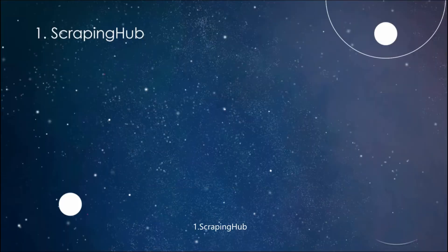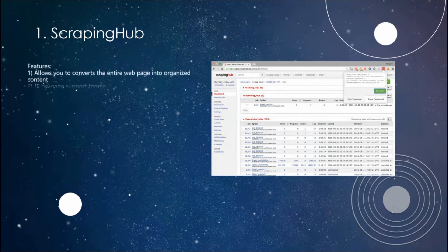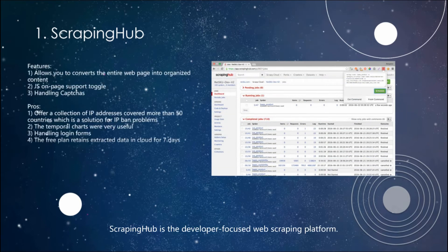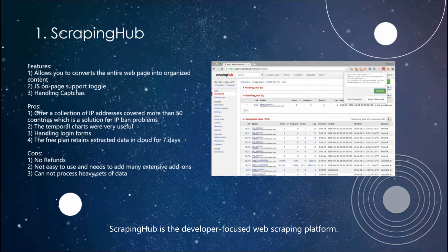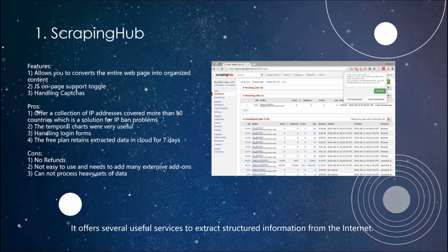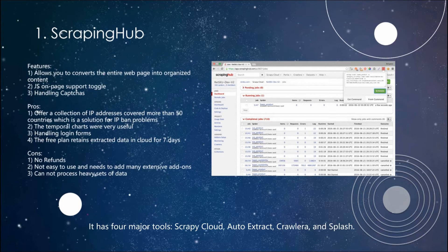1. Scraping Hub. Scraping Hub is a developer-focused web scraping platform. It offers several useful services to extract structured information from the Internet. It has 4 major tools: Scrappy Cloud, Auto-Extract, Corollary, and Splash.